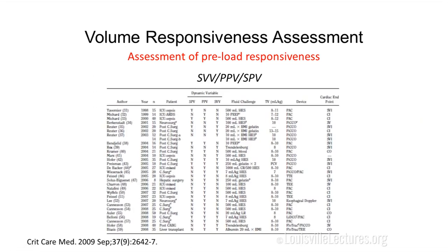A meta-analysis I participated in as a fellow pooled all studies examining these parameters. The studies had mostly very small sample sizes — as few as 15 patients, with the largest having around 40. They were mostly single-center studies done in post-cardiac surgery patients, a very controlled environment, though some were done in patients with ARDS and sepsis.